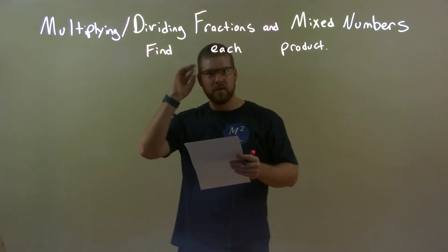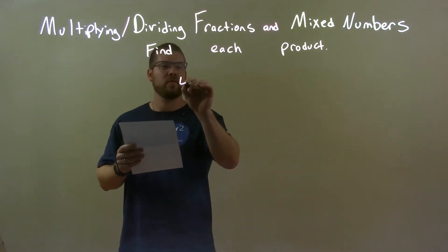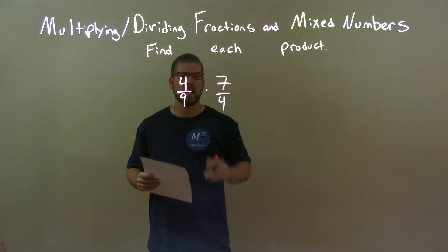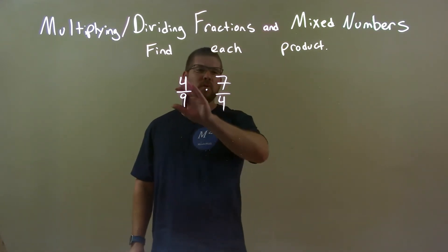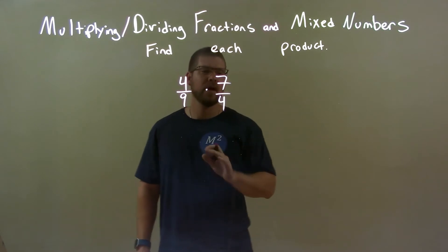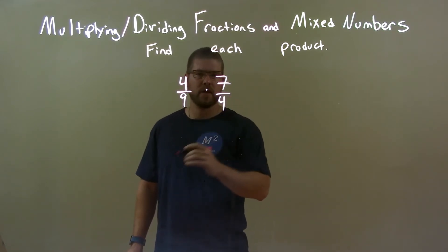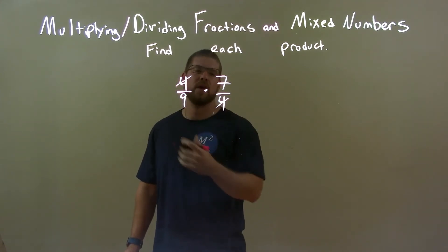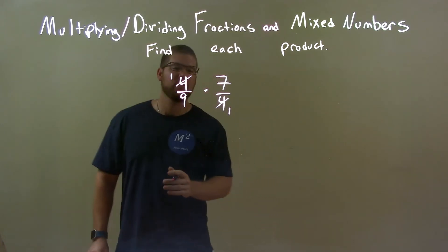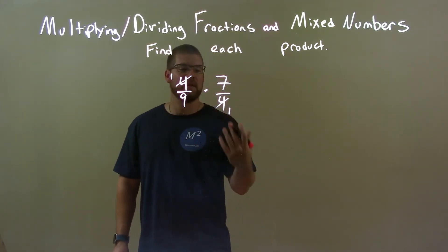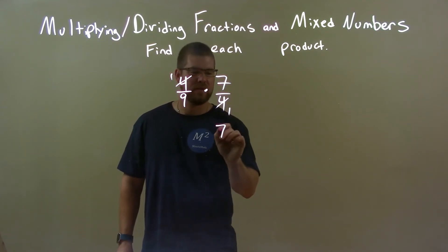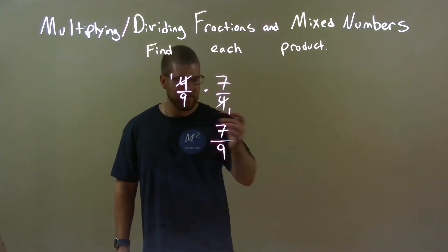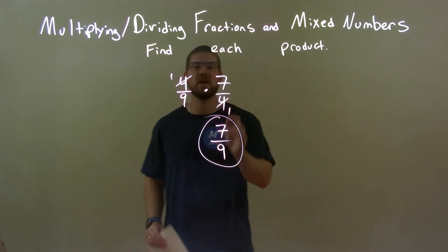So if I was given these numbers: 4 over 9 times 7 over 4. Well, one thing we can see — we just multiply across the numerator and multiply across the denominator and simplify. But we see there's a 4 here and a 4 here, so this is a multiplication going on. This 4 and this 4 both cancel each other out, and I'm left with 1's. So now when we multiply across the numerator and multiply across the denominator it's easier. 1 times 7 is 7, and 9 times 1 is 9. This cannot be simplified anymore, so our final answer is just 7 over 9.